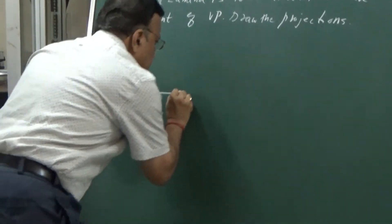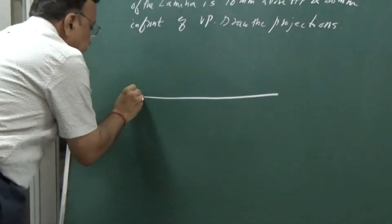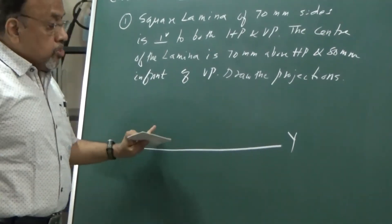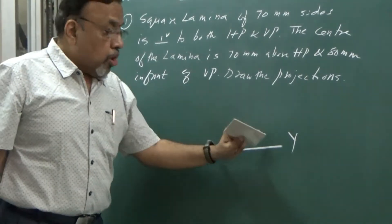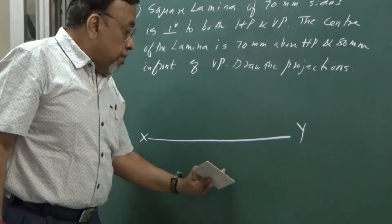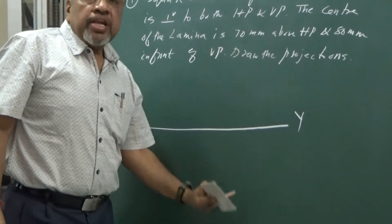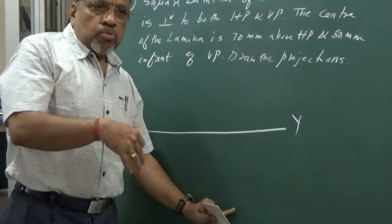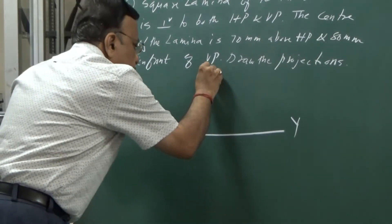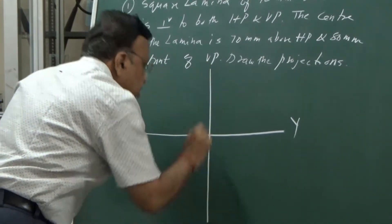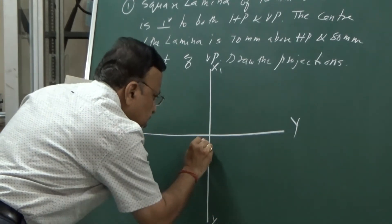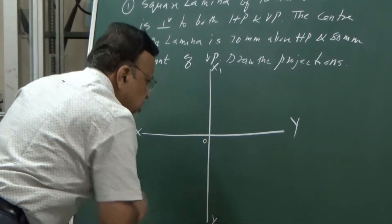I will draw the XY line as usual. The XY line is for your top and front views. Since I want to draw the side view, I need to draw the other line perpendicular to XY — that is the X1Y1 line. I am going to project it onto the right profile plane, so I get this line which is the X1Y1 intersection.